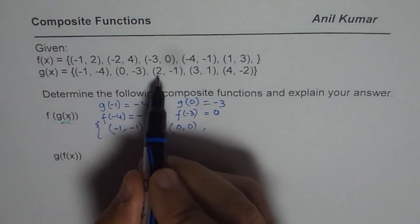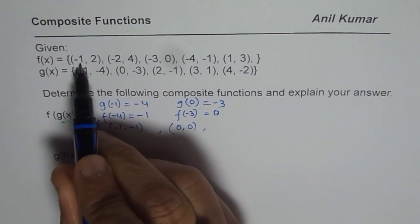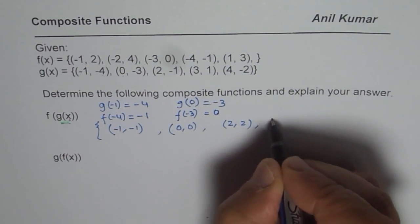Now we will find what is g of 2. g of 2 is minus 1. What is f of minus 1? f of minus 1 is 2. So we get the third point, which is (2, 2). Let us follow this process.